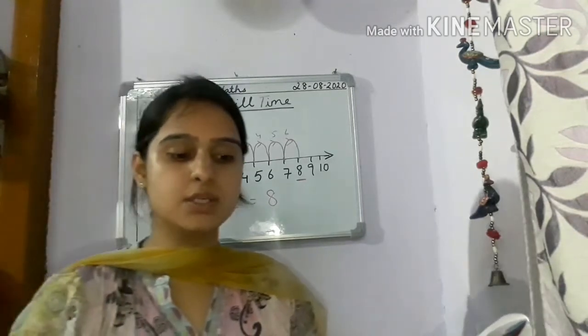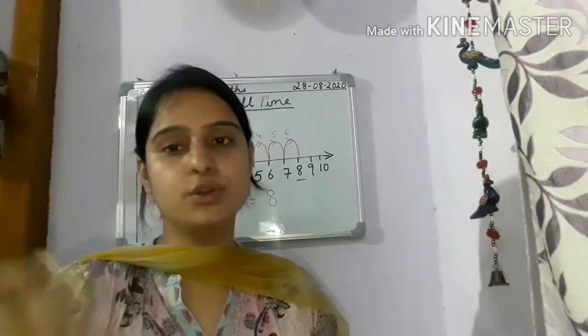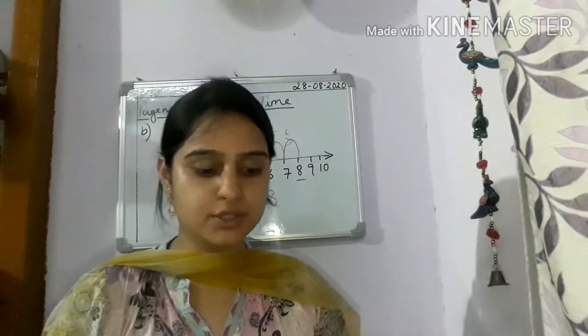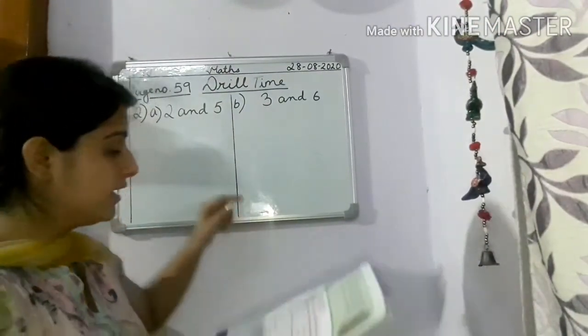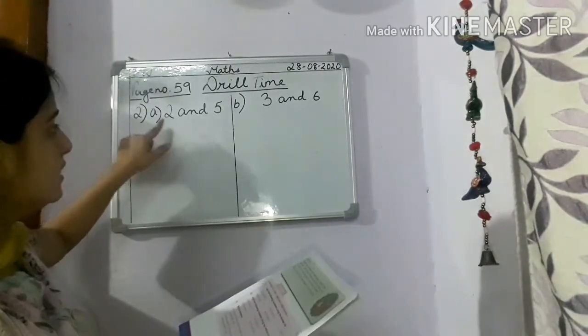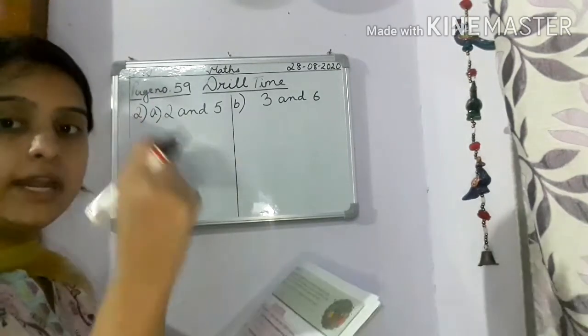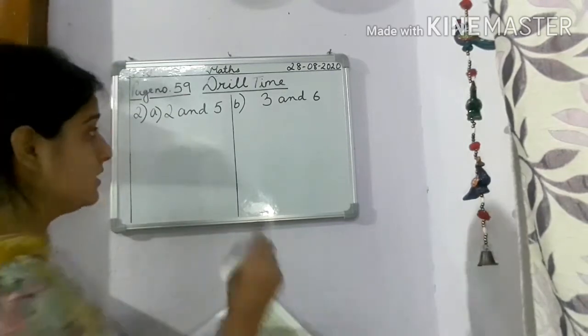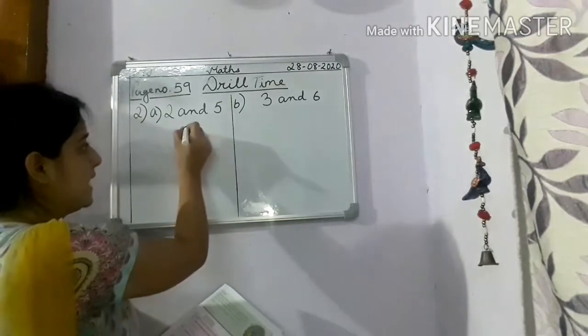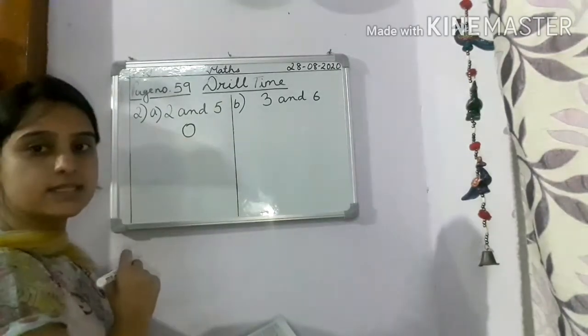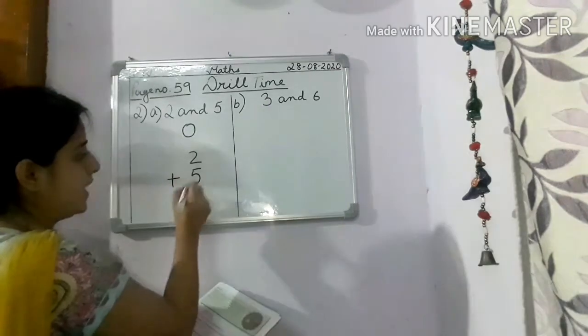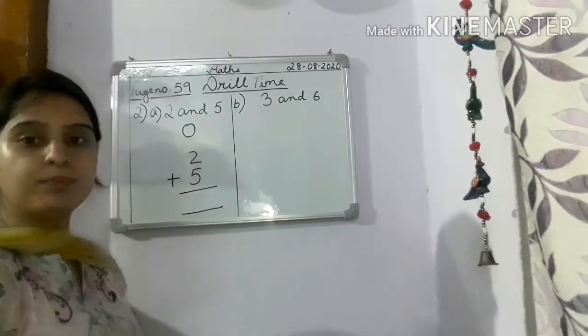Add the following numbers using the vertical or column method. You know how to add using vertical or column method, isn't it? So it will be a kind of revision for you children. So let's do it children, let's start with 2A. Add the following numbers using the vertical or column methods. So A is what? 2 and 5. We have to arrange this number vertically. So how do we arrange children? This is one digit number. Will come under which place? Will come under one's place. So we will first put ones, then we will put vertically 2 plus 5.